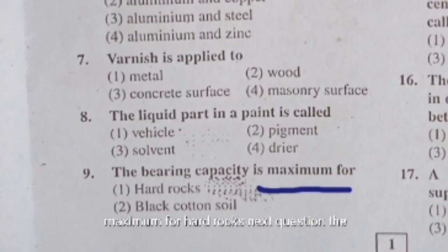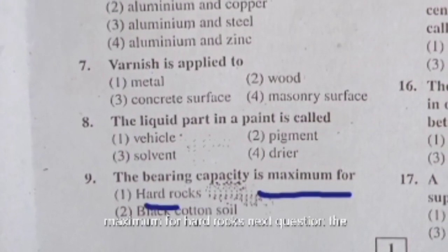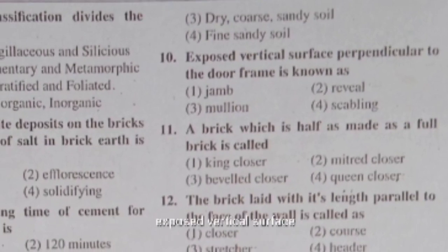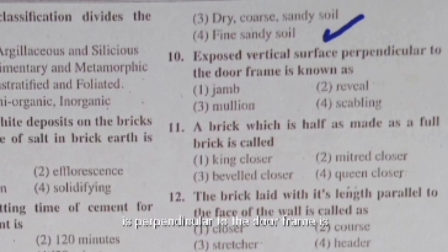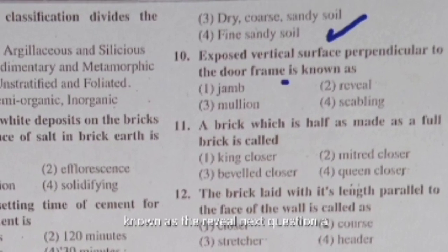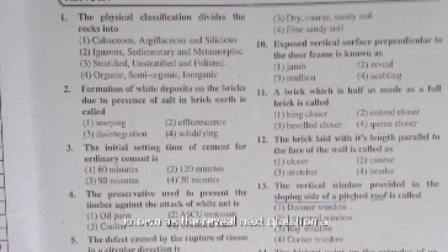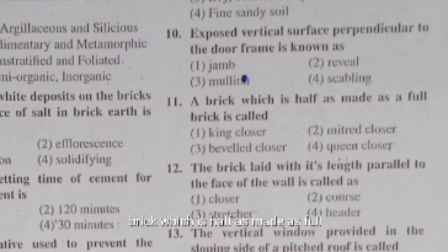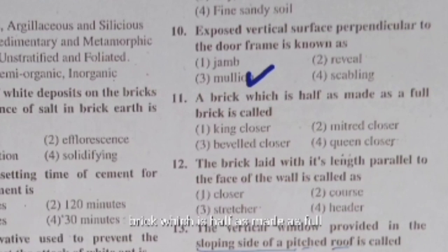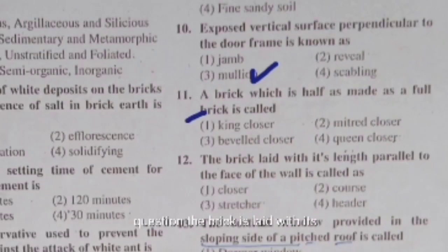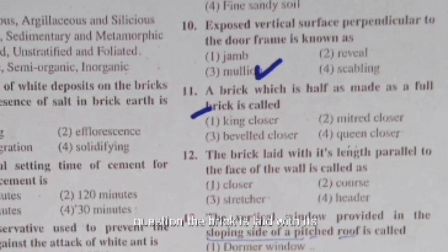The bearing capacity is maximum for hard rocks. The exposed vertical surface perpendicular to the door frame is known as the reveal. A brick which is half as wide as a full brick is called a queen closer.